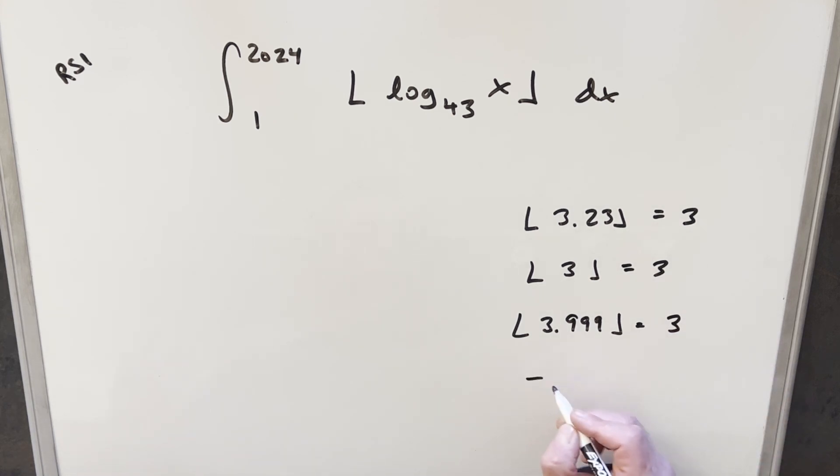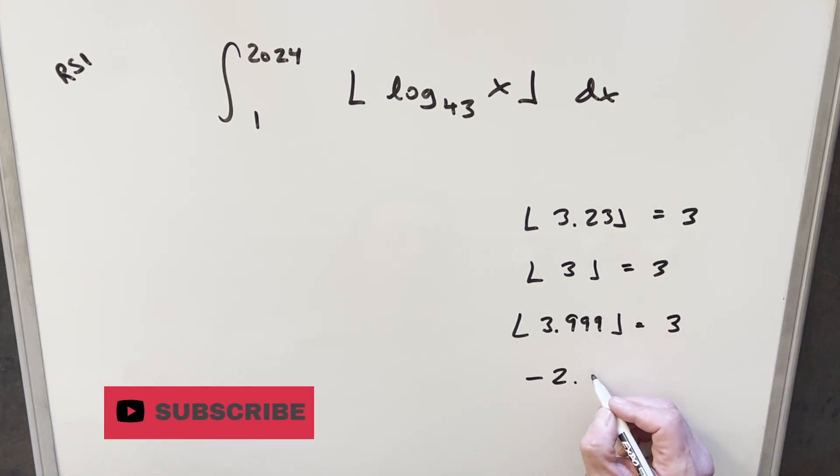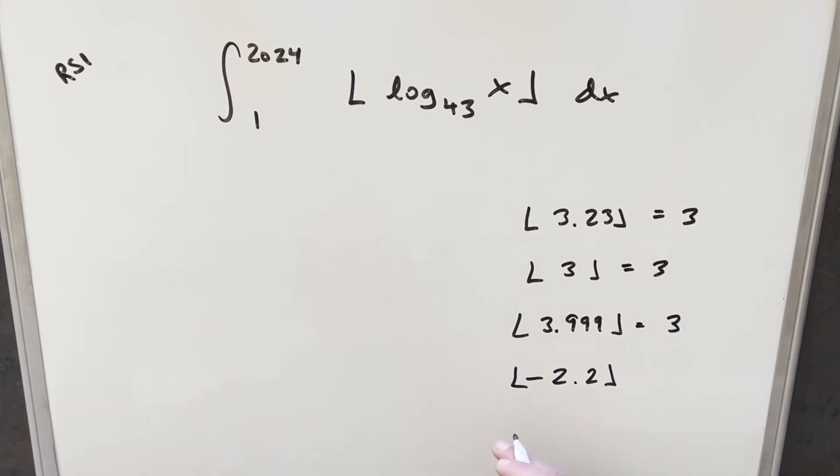And one thing to be careful about, if you happen to have negative numbers, let's say I have minus 2.2, let's say we have the floor of this. Now if you went to minus two, that's rounding up, rounding down, it's going to take me to minus three.